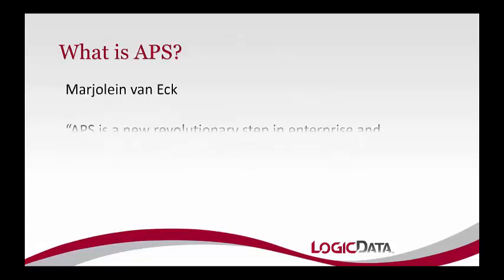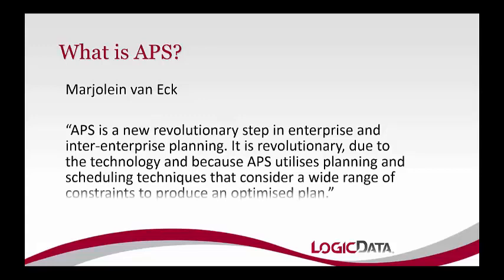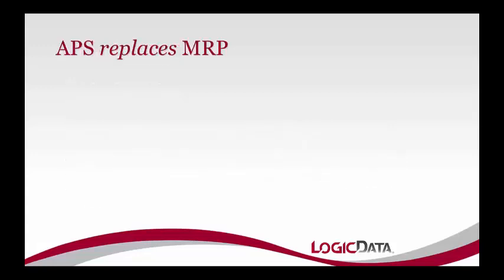So what is APS and how is it different? APS is a replacement for MRP — you don't run MRP and APS together. APS was initially developed theoretically in the 1990s, and at that point it took very large computers to run. However, now we have technology that allows us to run it even on a desktop computer because computers have gotten so much faster.